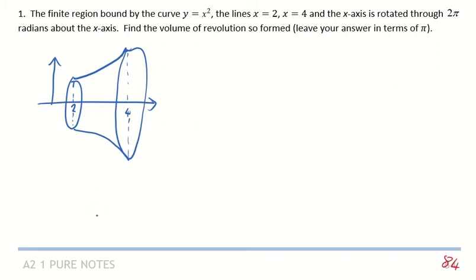Okay, so a sort of lampshade on its side sort of shape. So that's what we've got. So our v, our volume, is equal to pi times the integral, and we're just going to write a, b, y squared dx.